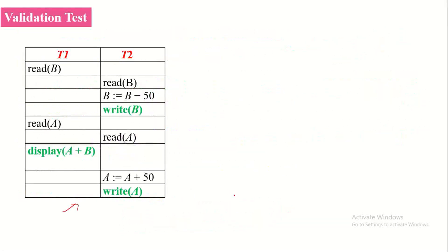Let us now determine whether a given non-serial schedule is serializable by applying the validation based protocol. This is a non-serial schedule because before the completion of transaction T1's operations, transaction T2 started its execution. Let us apply the validation based protocol on this.